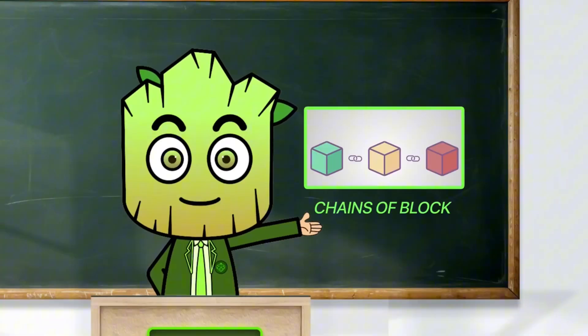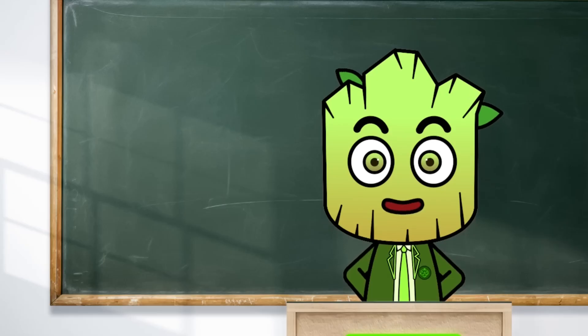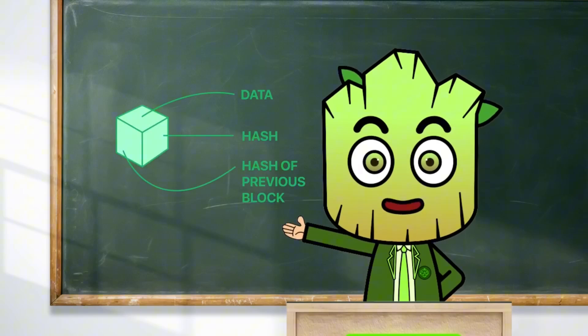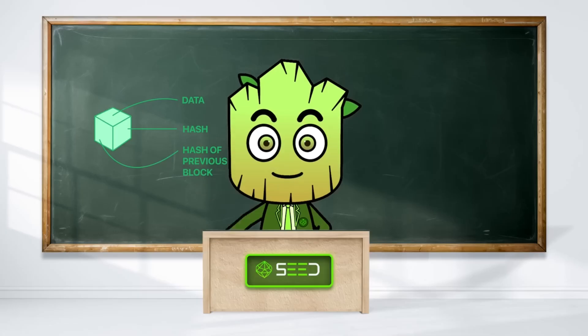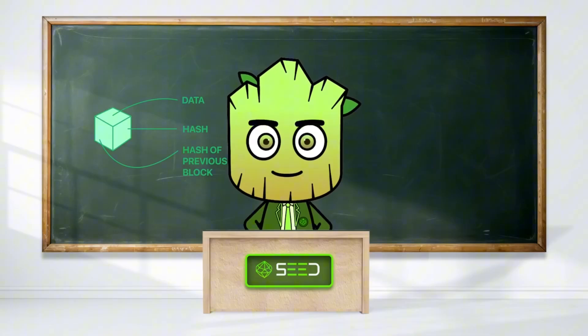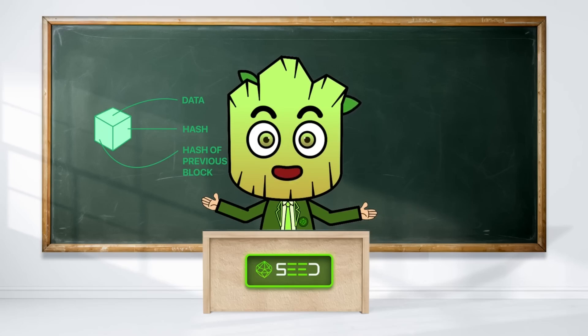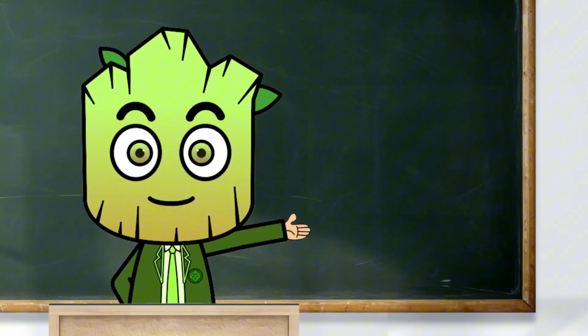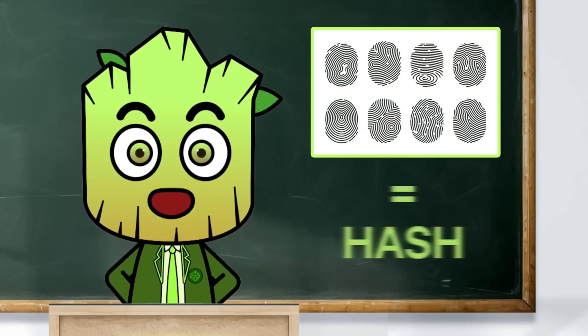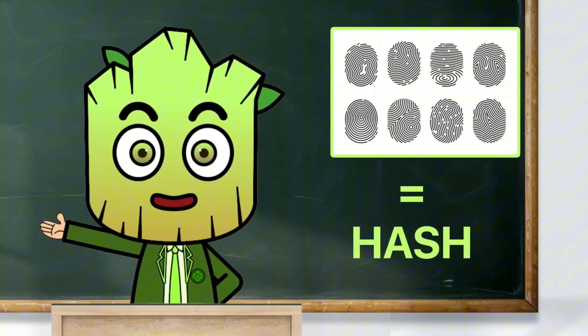Blockchain is a chain of blocks. Yes, you heard it right. But the block here is not empty. It has data inside. Each block also contains a unique identifier called a hash, generated based on the block's data. Just like every person has their own fingerprint, every block in the blockchain has its own hash.